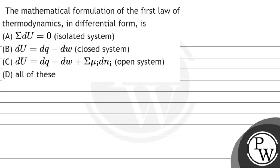Please read this question. The mathematical formulation of the first law of thermodynamics in differential form is: option A, summation over delta U is equal to zero for an isolated system; option B, delta U equal to delta Q minus delta W for a closed system; option C, delta U equal to delta Q minus delta W plus summation over mu_y dN_i for an open system; and option D, all of these.